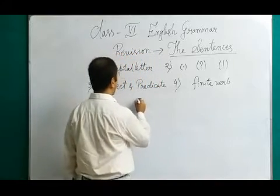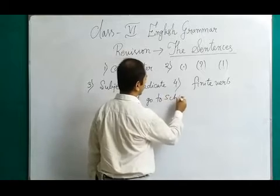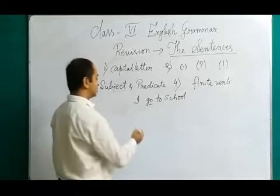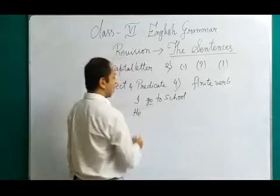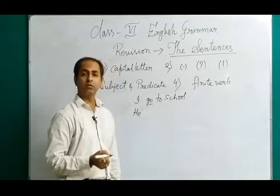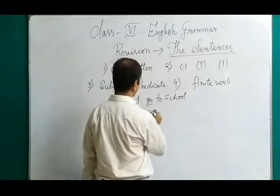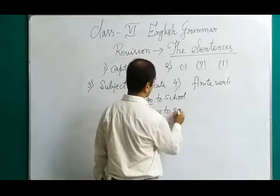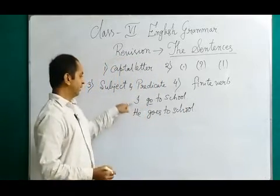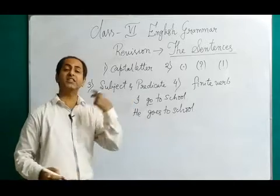For example, if I write 'I go to school,' the verb is 'go.' Now if I change the subject from 'I' to 'he,' should I write 'he go to school'? No, that is wrong. We should write 'he goes to school.' You can see the change from 'go' to 'goes' because the subject is getting changed from 'I' to 'he.'